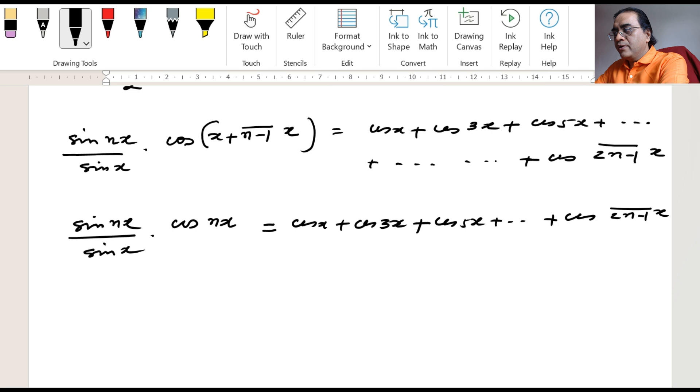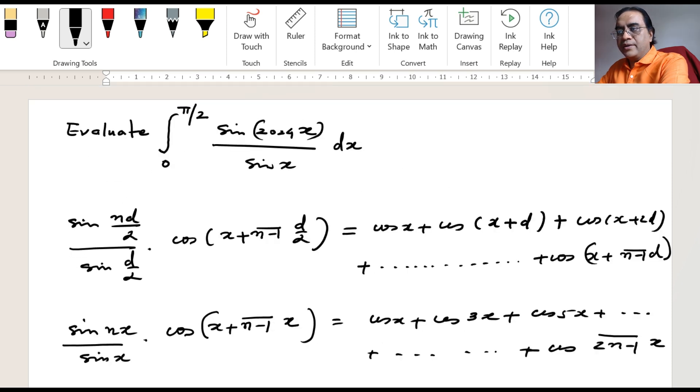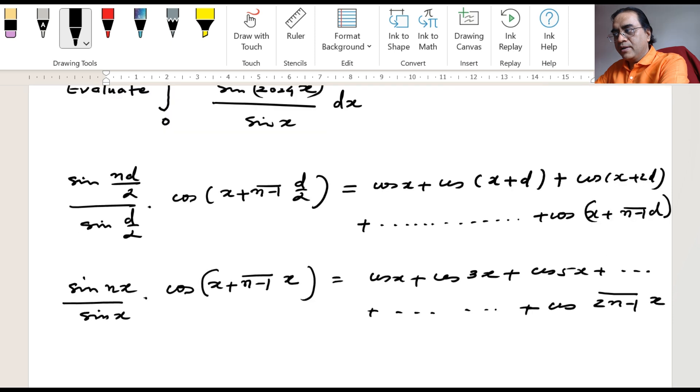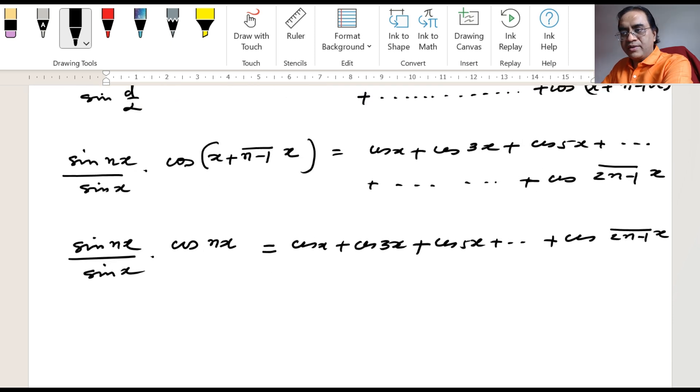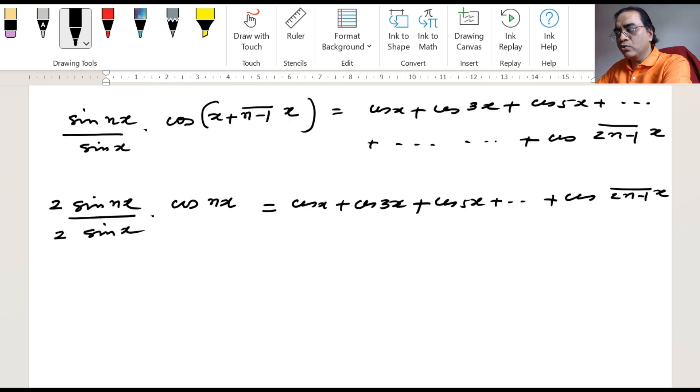Now we want sin nx by sin x type of pattern, but this cos nx is creating a problem. We just want sin in the numerator. We can do it by multiplying and dividing by 2. We have got 2 sin theta cos theta, sin 2 theta basically.